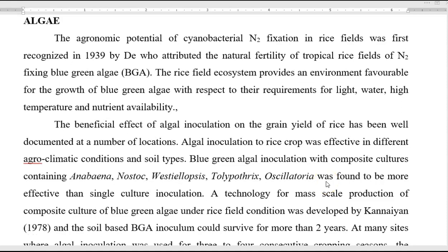Blue-green algae are commonly present in tropical rice fields and are involved in nitrogen fixation. The favorable conditions for their growth include light, water, high temperature, and nutrient availability. The beneficial effect of algal inoculation on rice grain yield is best documented when using different kinds of cultures together, commonly referred to as composite cultures — that is 2 or 3 species mixed together and applied on a field.